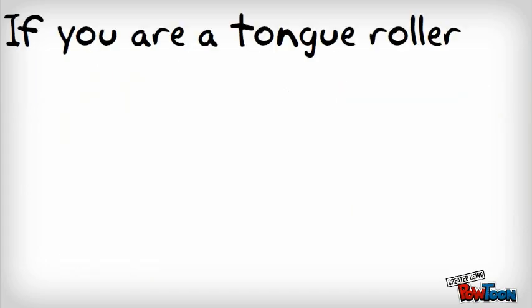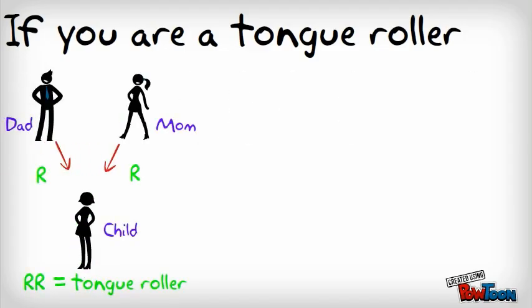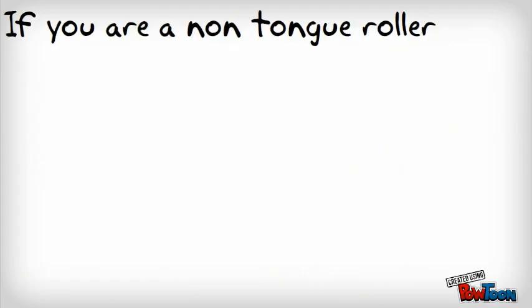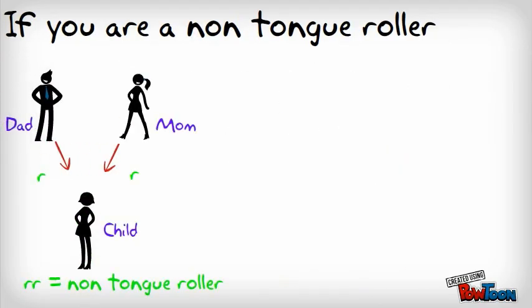So if you are a tongue-roller, then you could have inherited a big R from each parent, or you could have inherited a big R from one parent and a little r from the other parent, and you would still be a tongue-roller — because that big R is dominant over the little r. If you are a non-tongue-roller, then you must have inherited a little r allele from each parent.